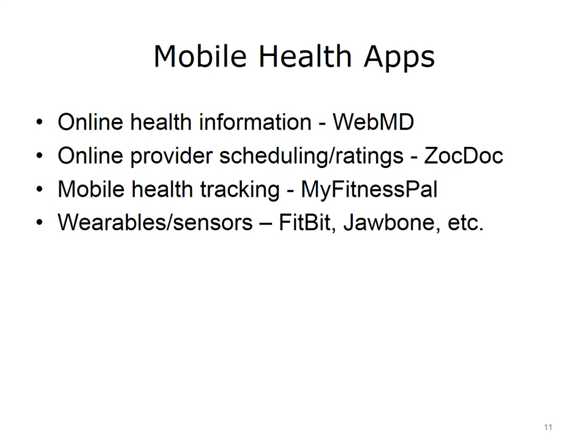Using online health information sites such as WebMD, patients can investigate symptoms and work toward diagnostic and therapeutic impressions. Online health reviews like ZocDoc allow patients to search for providers by specialty, zip code, or even accepted insurance and schedule appointments. Patients can also review and add provider ratings. Mobile health tracking websites and apps like MyFitnessPal track caloric consumption and exercise on the go to help with weight management. Wearable sensors such as the Fitbit family of devices and the Jawbone are just some of the many available consumer-level activity sensors to help users monitor their activity, sleep, and other personal health goals. Entries into this market are frequent and expanding rapidly.